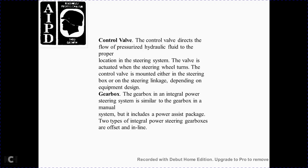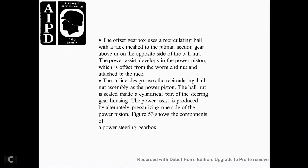The gearbox in an integral power steering system combines the gearbox and the manual system with a power assist package. There are two types of integral power steering gearboxes: offset and inline. The offset gearbox uses a reciprocating ball and rack master with the pitman section gear and valve at the opposite end with a pole bolt. The power piston is offset with the worm and nut attachment and rack. The inline design uses a reciprocating ball nut assembly with the power piston and bolt nut scaled within the cylinder, holding the power assist to produce alternate pressure on one side of the power piston.